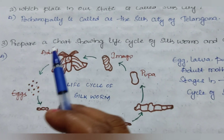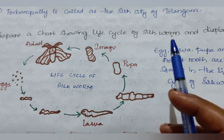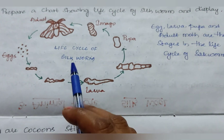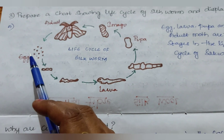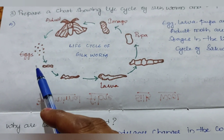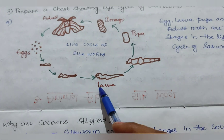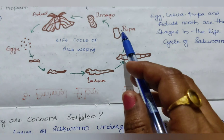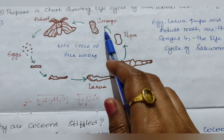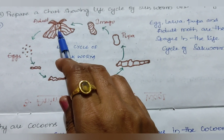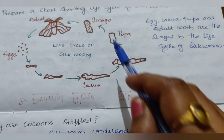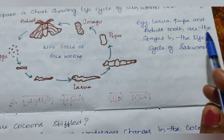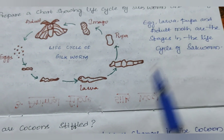Third question: Prepare a chart showing the life cycle of silkworm and display it. The different steps of the silkworm life cycle are: first, Egg; then the eggs develop into different larval forms; from larva it changes into Pupa, then Imago, and an adult moth is formed. So the stages are Egg, Larva, Pupa, and Adult Moth.